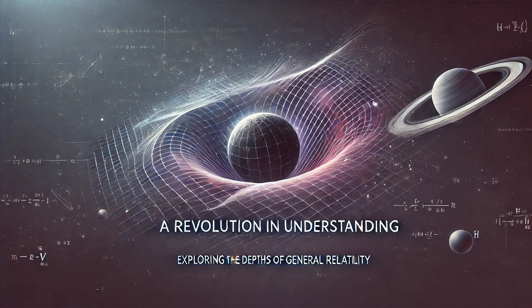This curvature of space-time is not merely a geometrical abstraction. It has tangible physical consequences. One of the most dramatic predictions of general relativity is the bending of light in the presence of massive objects. This phenomenon, known as gravitational lensing, has been observed numerous times, providing compelling evidence for the theory.